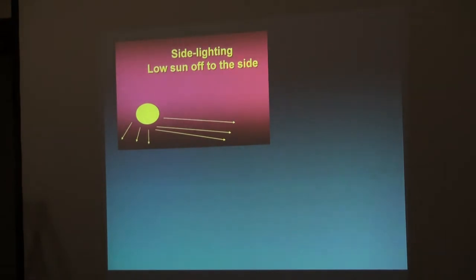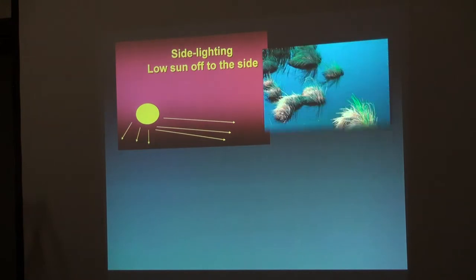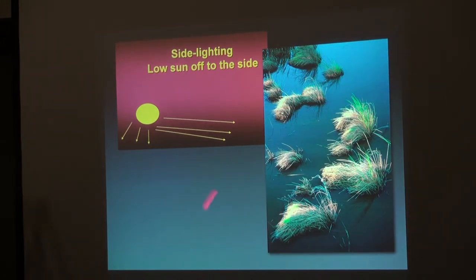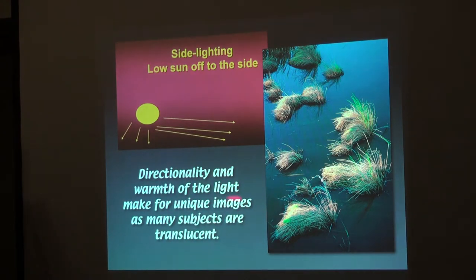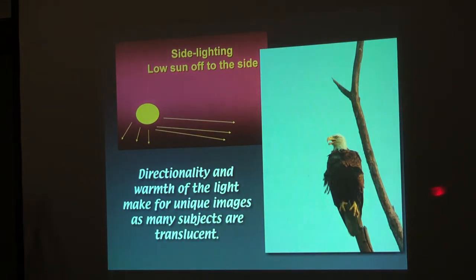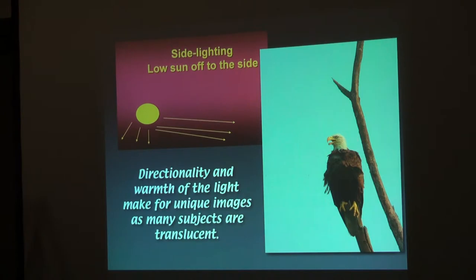Side lighting — if the sun is perpendicular to the plane you're looking at, most nature subjects are translucent and transmit light. It creates very beautiful light with directionality and warmth. This is the one that's used very little. Even this eagle — this is early morning directional light. See where it's coming from. It's more interesting than if the eagle were photographed at noon. Everything will wash out at noon.